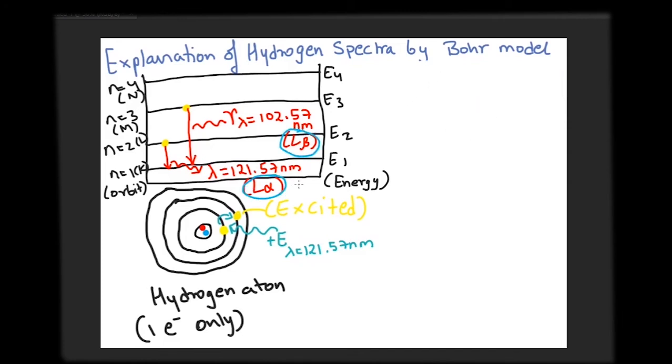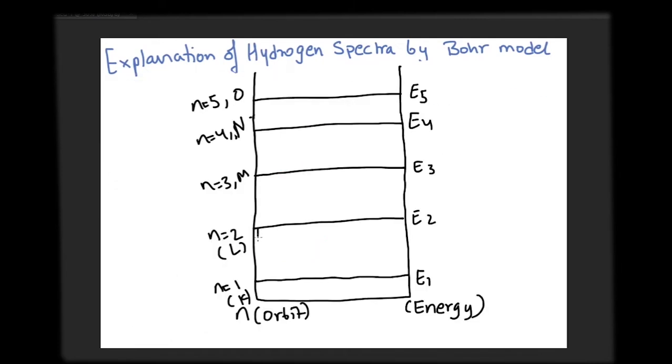All transition of electrons from higher orbits to the K orbit forms the Lyman lines. The Balmer series of spectral lines is formed due to the transition of electrons from orbits higher than L to the orbit L for which n is equal to 2.